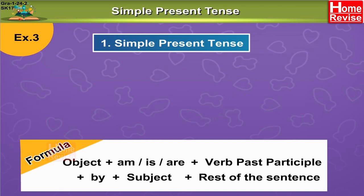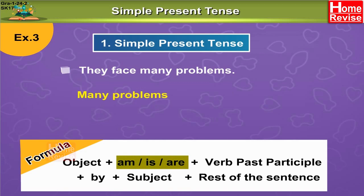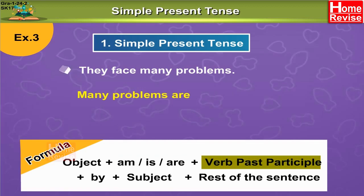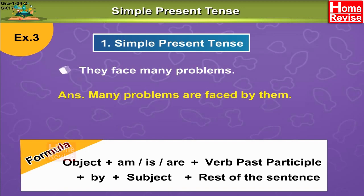Now see one more interesting example. They face many problems. What do they face? Many problems. So your object is many problems. Your sentence begins with many problems — to be form of the verb is 'are,' because problems is plural, so we use the plural form 'are' — past participle of face is 'faced' — by them. They is the subject, and them is the objective case of the subject. So your answer is: many problems are faced by them.